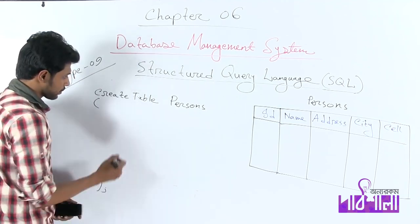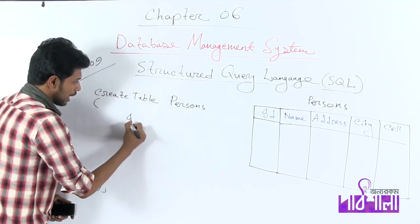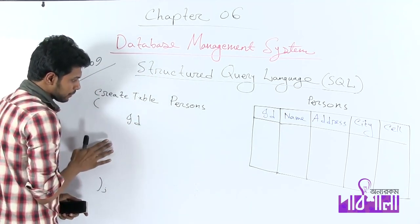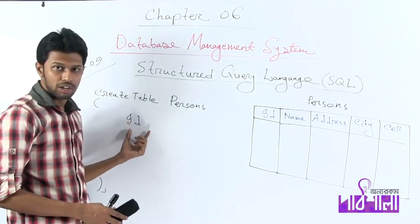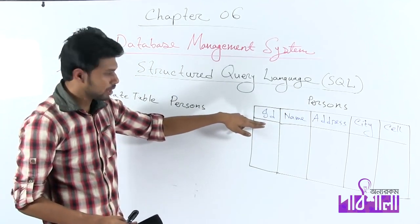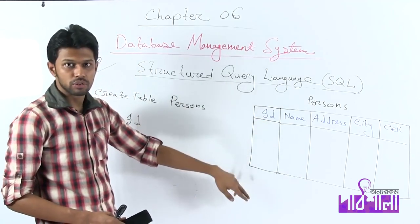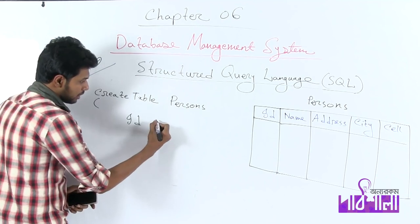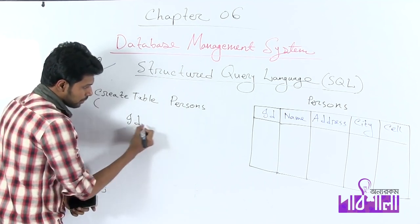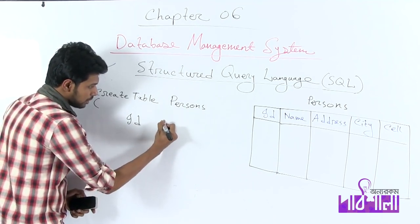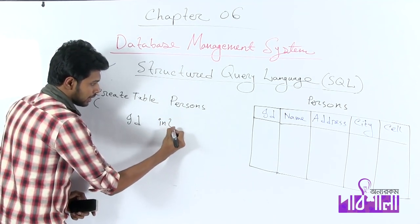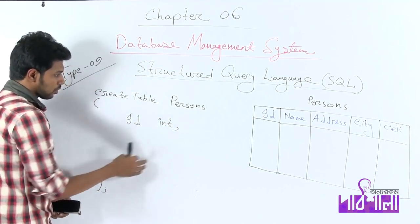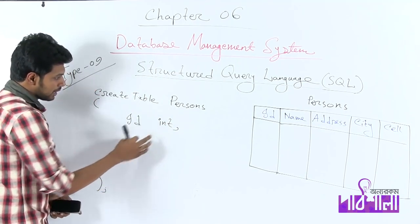This column name is ID. Let's write the ID column name. The number type is 1, 2, 3, 4. The number type is int. You can write the ID column name with integer type.